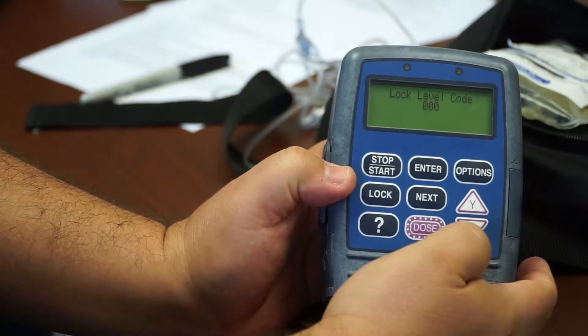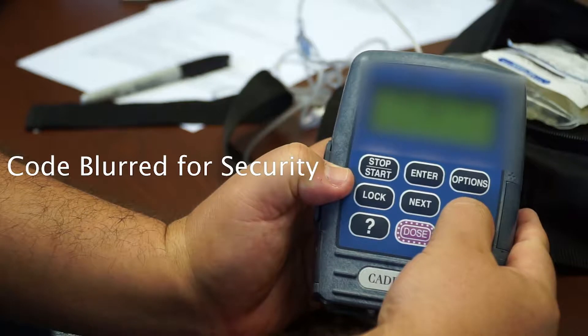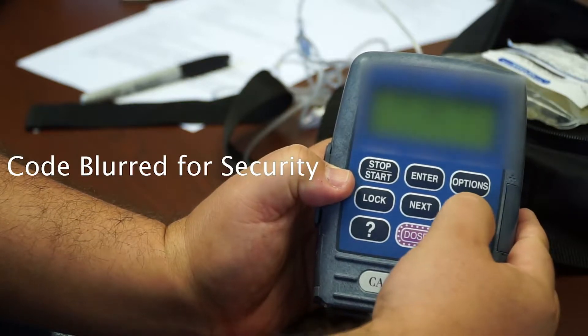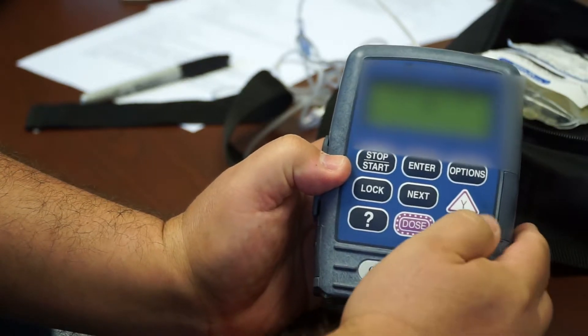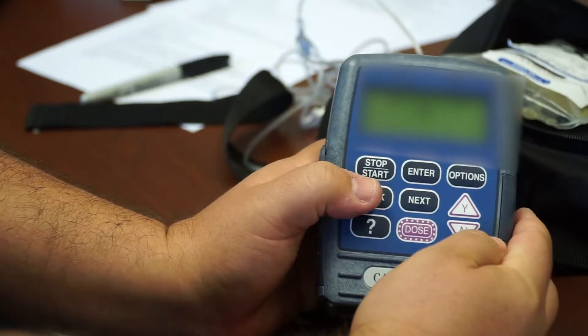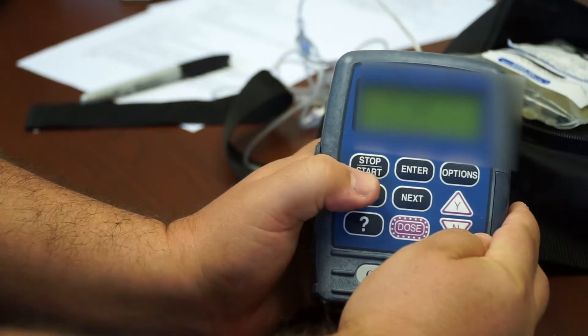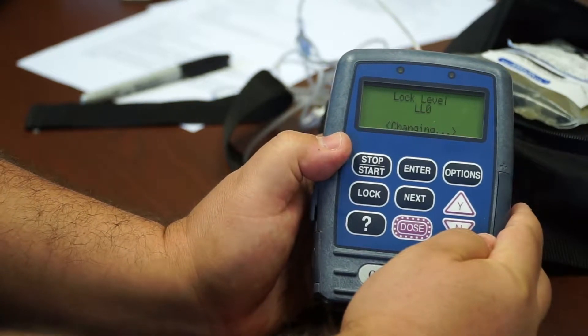And then it'll ask you to enter a code. You put in the code, you click on lock again, and it'll say lock level changing.